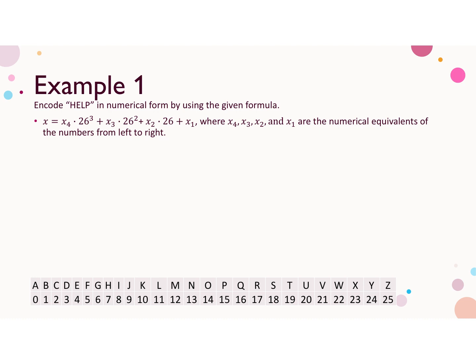First thing we want to do is look up the codes corresponding to the letters in HELP. H, E, L, P. So H is 7, E is 4, L is 11, and P is 15.